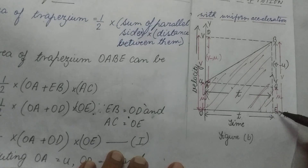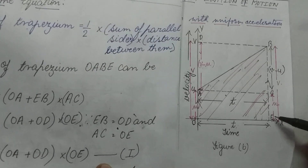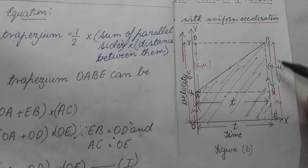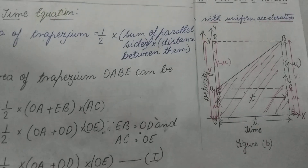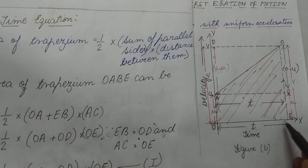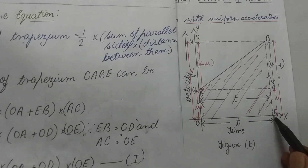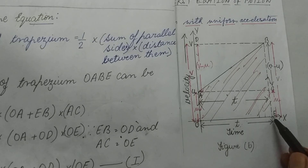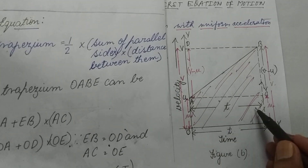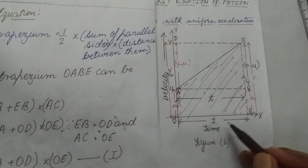Here, EB equals v and EC equals u, so CB equals v minus u. The time axis is OX. OE equals T, and AC equals T as well. So AC equals OE equals T.